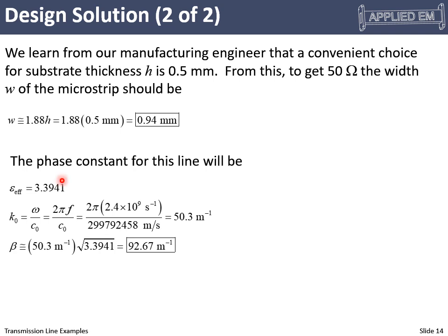What about the phase constant? First we calculate the effective permittivity. We then also need our free space wave number, which we'll calculate from the frequency and the speed of light. That ends up being about 50 inverse meters. Then we can calculate our phase constant and that comes out to be about 92.6 inverse meters. And the reason we want these parameters, in a little bit we're going to learn how to design things from transmission lines. And we will need those parameters to do those designs with.